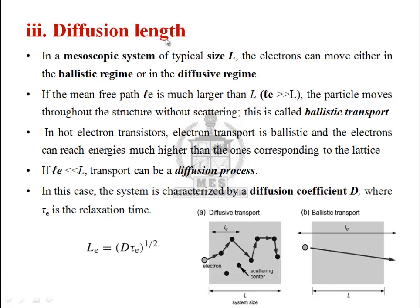Next is diffusion length. Consider a mesoscopic system of size L. In such a system, electrons can move either in a ballistic regime or in a diffusive regime. If L_e is greater than L — where L_e is the mean free path and L is the system length — the electron travels without scattering.